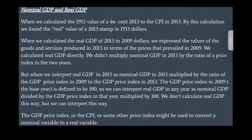Nominal GDP and real GDP. When we calculate the real GDP of 2013 in 2009 dollars, we express the values of goods and services produced in 2013 in terms of the prices that prevailed in 2009. We calculate real GDP directly — we don't multiply nominal GDP in 2013 by the ratio of a price index in the two years. But we can interpret real GDP in 2013 as nominal GDP in 2013 multiplied by the ratio of the GDP price index in 2009 to the GDP price index in 2013. The GDP price index in 2009, the base year, is defined to be 100. So you can interpret real GDP in any year as nominal GDP divided by the GDP price index in that year, multiplied by 100. We don't calculate real GDP this way, but we can interpret it this way.